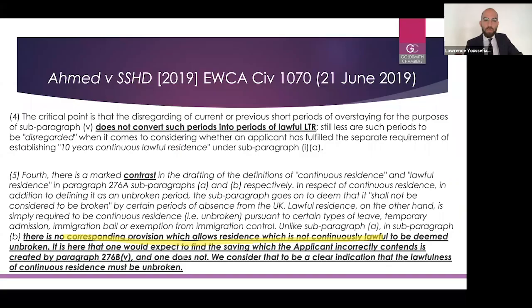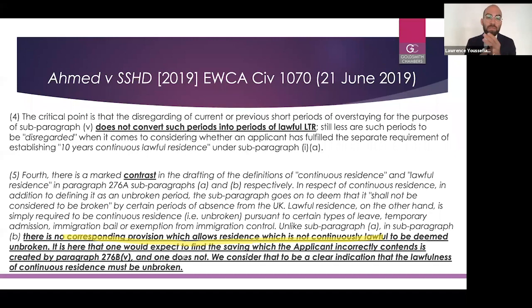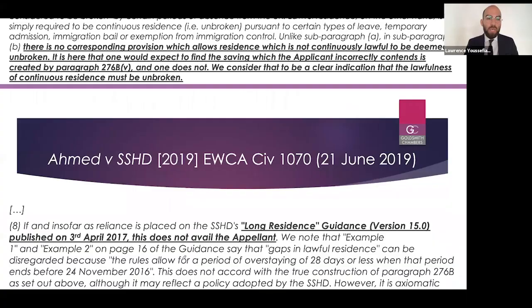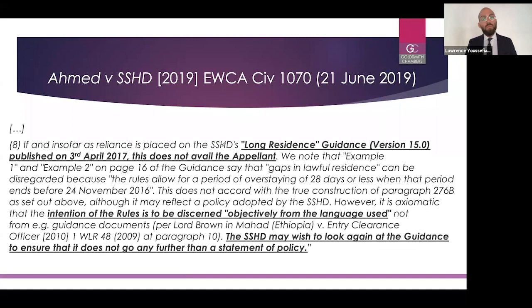As a result, there are two separate provisions. The first requirement is for you to have 10 years' continuous lawful residence without any single period of overstaying, and under sub-paragraph five the question is simply whether you are currently unlawfully in the UK. At paragraph 15, sub-paragraph 8 of the Court of Appeal judgment, the court also says that reliance on Home Office guidance did not assist the appellant in that case to construe the requirements of the rules.